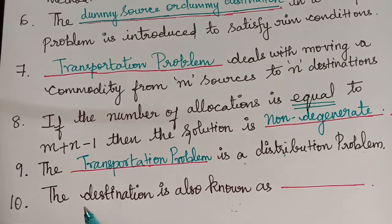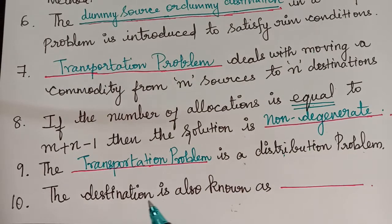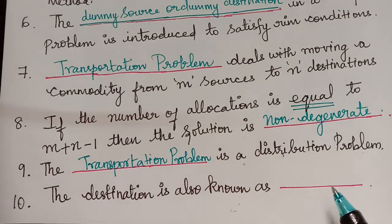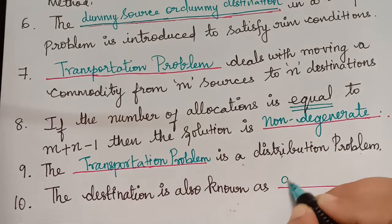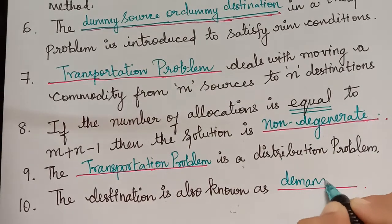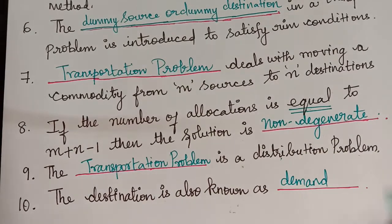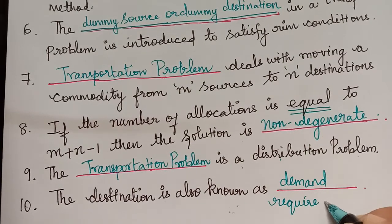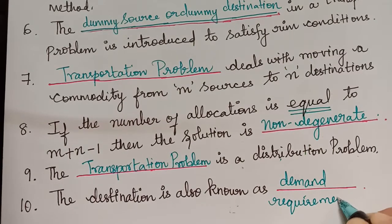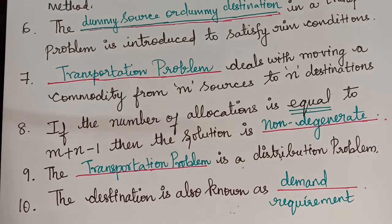The next question is: the destination is also known as dash. In a transportation problem, we have sources and destinations. The destination is also known as demand or requirement. Remember, destinations are also referred to as demand or requirement.